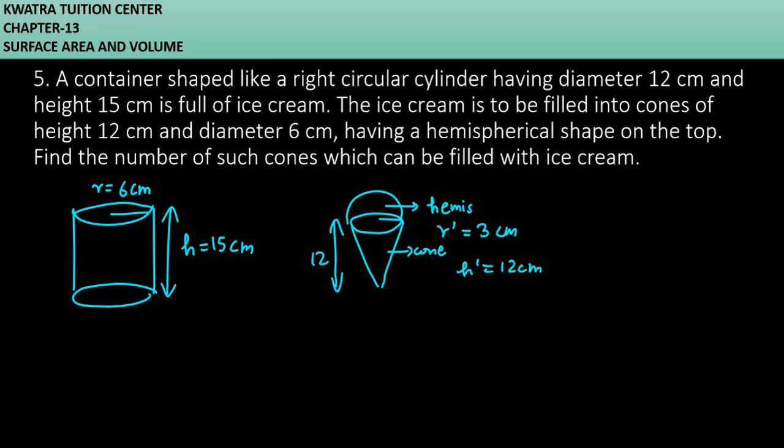Now what do we do here? Find the number of cones which can be filled with ice cream. Listen with attention to one thing which is very important. Cones can be filled with n number of cones. So this means volume of cylinder is equal to n into volume of cones.